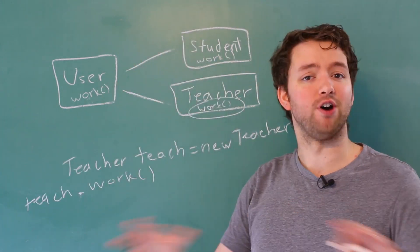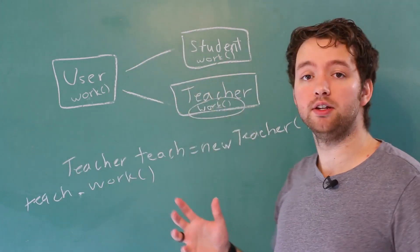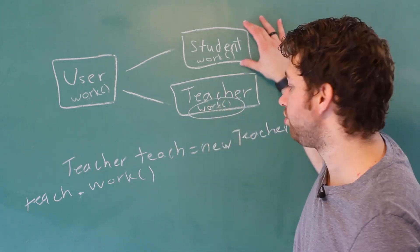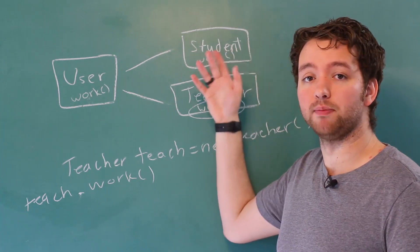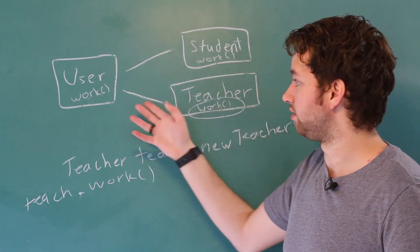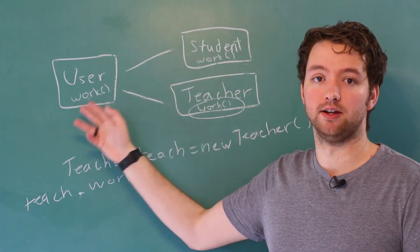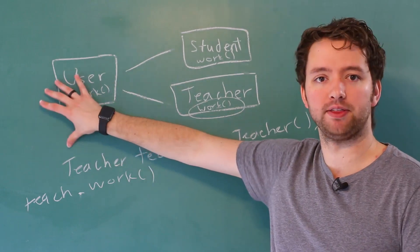Now inside a student, let's say we did not define the work method. If we created a new student down here and said student.work, it's not going to get that work method from the student class, so it's going to be getting it from the user class. So it's going to get the more general work method.